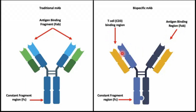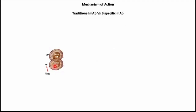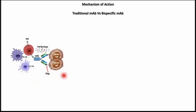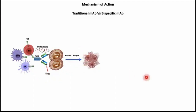So what is the mechanism of action of the bispecific monoclonal antibody? We know that the cancer cell expresses markers called tumor-specific antigens. So the traditional monoclonal antibody binds with both arms to the tumor-specific antigens. So the immune cells, such as NK cells, macrophages, and dendritic cells, can recognize that cancer cell and come to it, kill it, and lyse it. While the scenario for the bispecific monoclonal antibody is different.